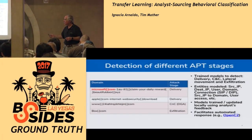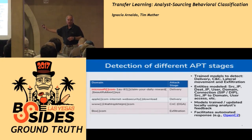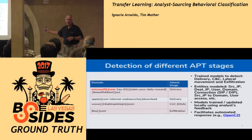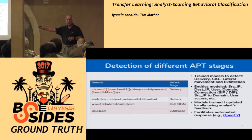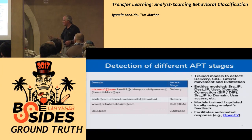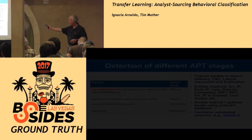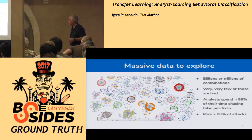The problem we're trying to tackle is detection across multiple phases of the kill chain — as far left and as early as possible, for example at delivery. We know it will get in, but can we at least stop it at command and control or before exfiltration, before intellectual property or whatever is important to your organization walks out the door? You'd like to detect it and block it as early as possible.